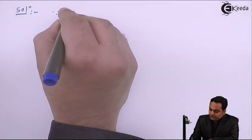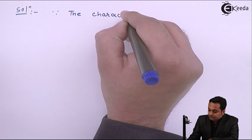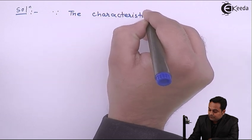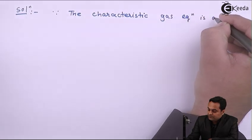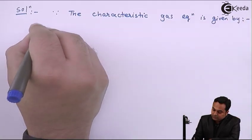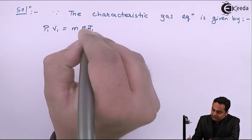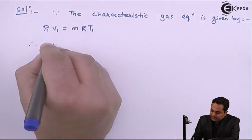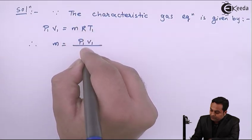The characteristic gas equation is used to find the mass of unknown air or gas. It is P1V1 = MRT1, so therefore mass M will be equal to P1V1 upon RT1.